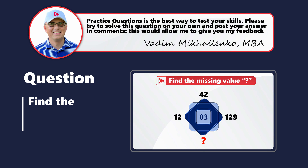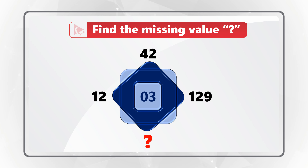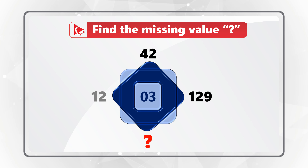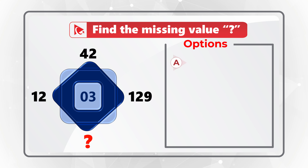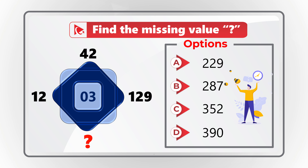Here's a practice question for you to test your skills and knowledge. I'm not going to share the solution — instead, I'm asking you to solve this challenge on your own and post your answer in comments so I can give you my feedback. Take a close look to find the missing value, represented by a question mark in a shape containing numbers 12, 42, 129 around it, and 3 in the middle. Four choices: A: 229, B: 287, C: 352, D: 390. Post your answer in comments!